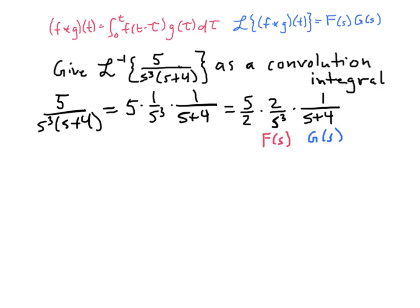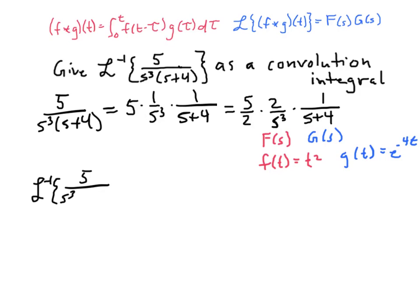The inverse transforms of those two functions give us little f of t equals t-squared and little g of t equals e to the minus four t. Now we have our two functions f and g of t, and we put those into a convolution integral. So the inverse Laplace transform of five over s-cubed times the quantity s plus four is equal to five-halves times the integral from zero to t.